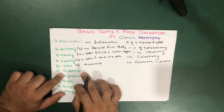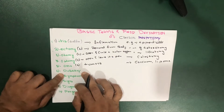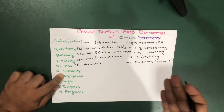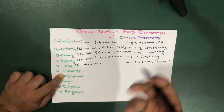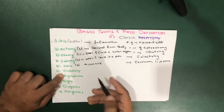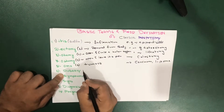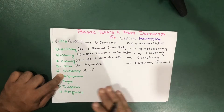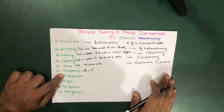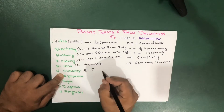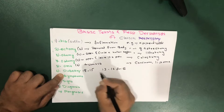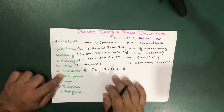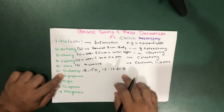Another basic definition is regarding puberty. Puberty is the age at which secondary sexual characters develop. It is between 12 to 15 years old for girls, and 13 to 16 years old for boys.